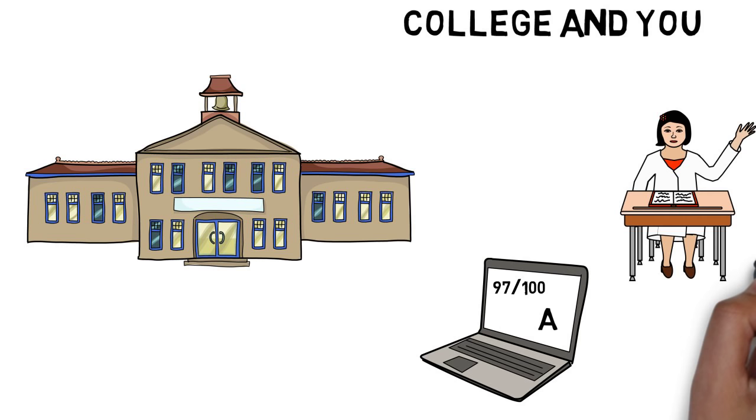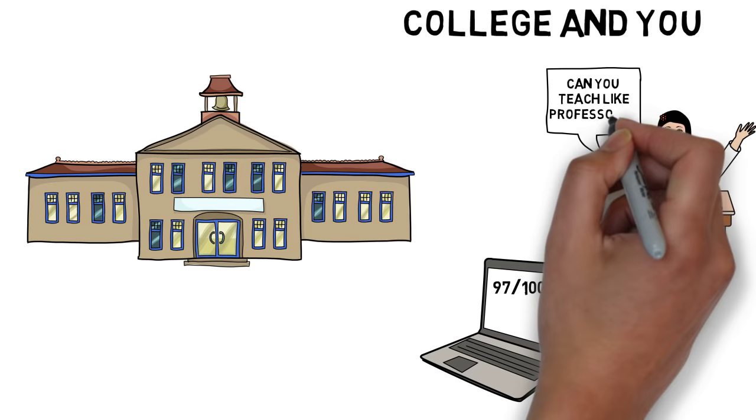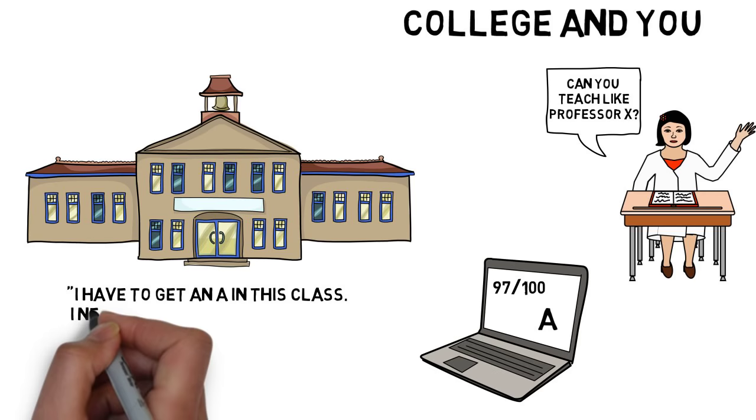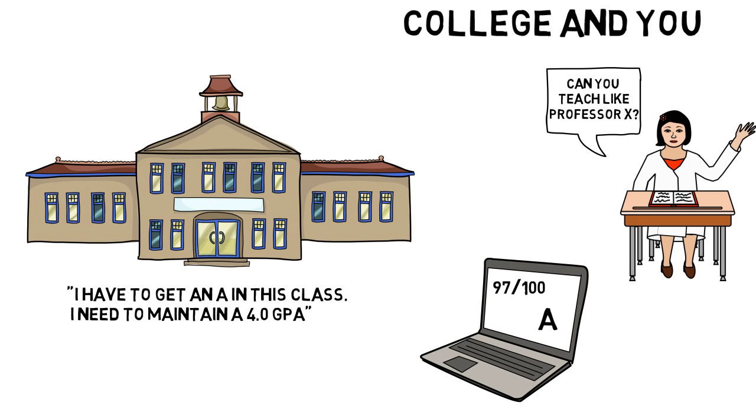Predictability happens when we expect one professor to teach the same way and use similar teaching styles. Calculability shows up when what we produce in the classroom and what can be measured is the primary focus. You know this is true when what matters most to you is the grade you receive in the class or your GPA. Is this more important than the process of learning? Can all learning be quantifiable?